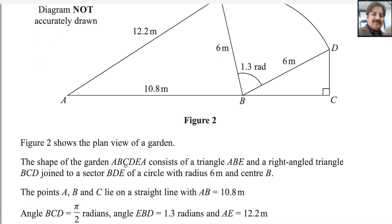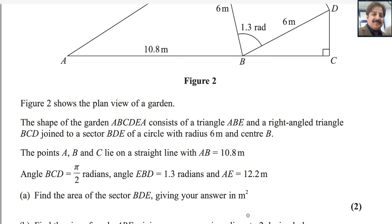The shape of the garden ABCDEA consists of a triangle ABE and a right triangle BCD, joined to a sector BDE of a circle with radius 6 centimeters at center B. The points A, B, C lie on a straight line with AB equals 10.8 meters, angle BCD equals π/2 radians, angle EBD equals 1.3 radians, and AE equals 12.2 meters. Find the area of sector BDE, giving your answer in square meters.